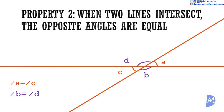Property 2: when two lines intersect, the opposite angles are equal. What do I mean by opposite angles? Here, angle A and angle C are opposite, and angle B and angle D are opposite.